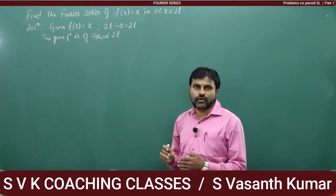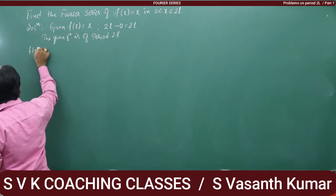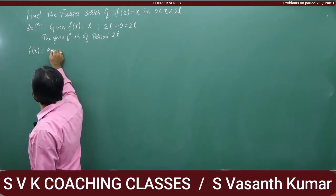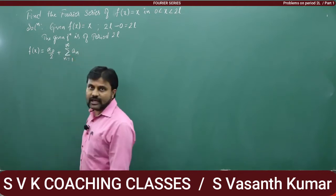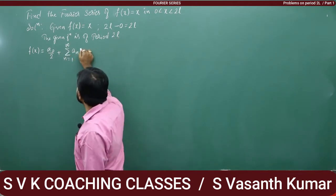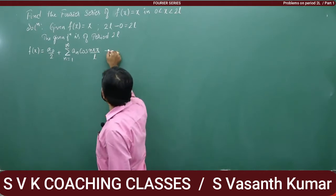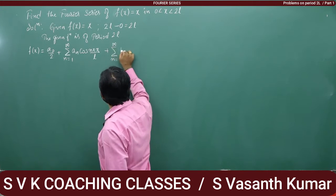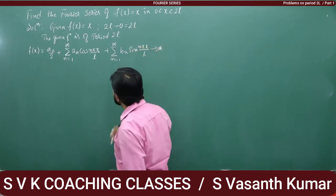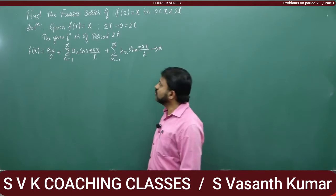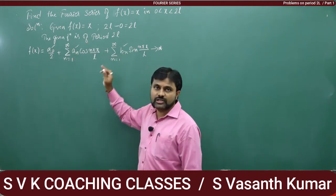The Fourier series for period 2L is given by: f(x) = a₀/2 + summation n=1 to infinity of aₙ cos(nπx/L) + summation n=1 to infinity of bₙ sin(nπx/L). Name this as equation star. We require the Fourier coefficients a₀, aₙ, bₙ using Euler's formula.